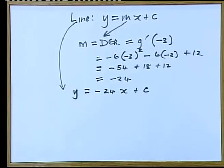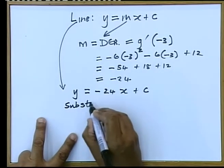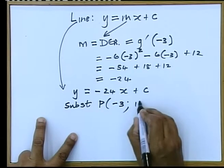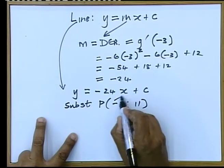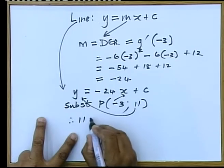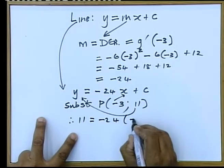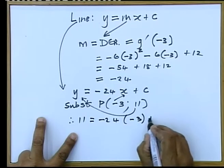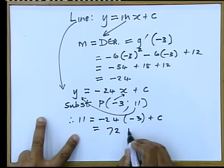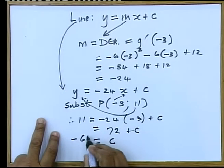To work out C's value, we can substitute any point. And point P that you have just been referred to has been given, so we can substitute the X and we can substitute the Y. That tells me that 11 is equal to negative 24 times minus 3 plus the C value, I'm going to get 72 plus C, therefore C's value is going to be negative 61.